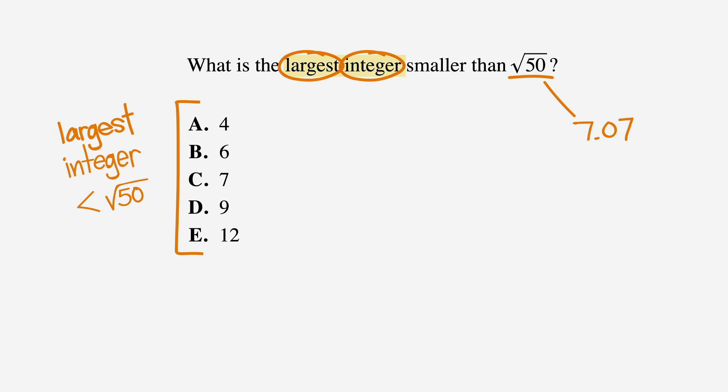So we're looking for the largest number that is still less than 7.07. Now we can easily see that the answer is C, 7, because it's smaller than 7.07 and greater than the first two choices, 4 and 6.